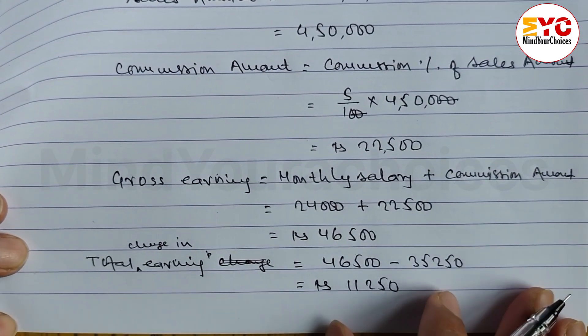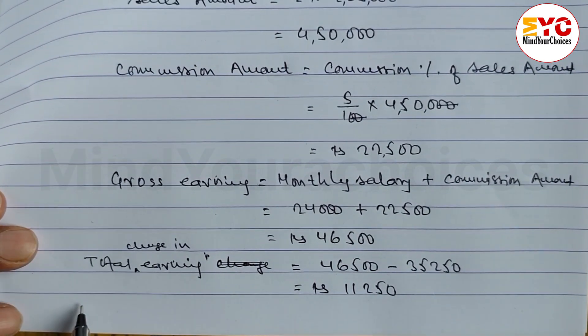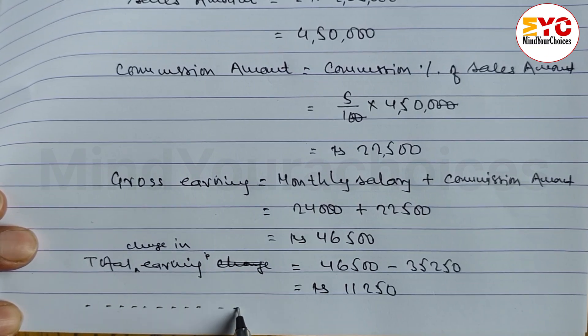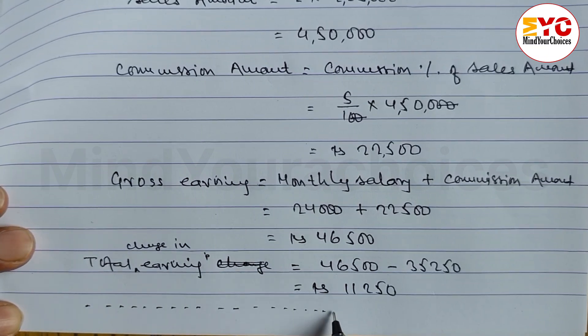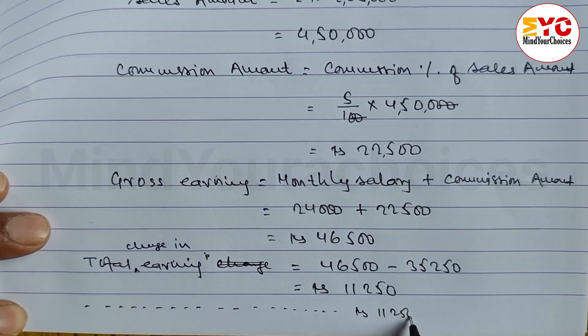If Mohan's sales double next month, his total earning will change by Rs. 11,250. The change in earning is 46,500 minus 35,250, which equals 11,250.